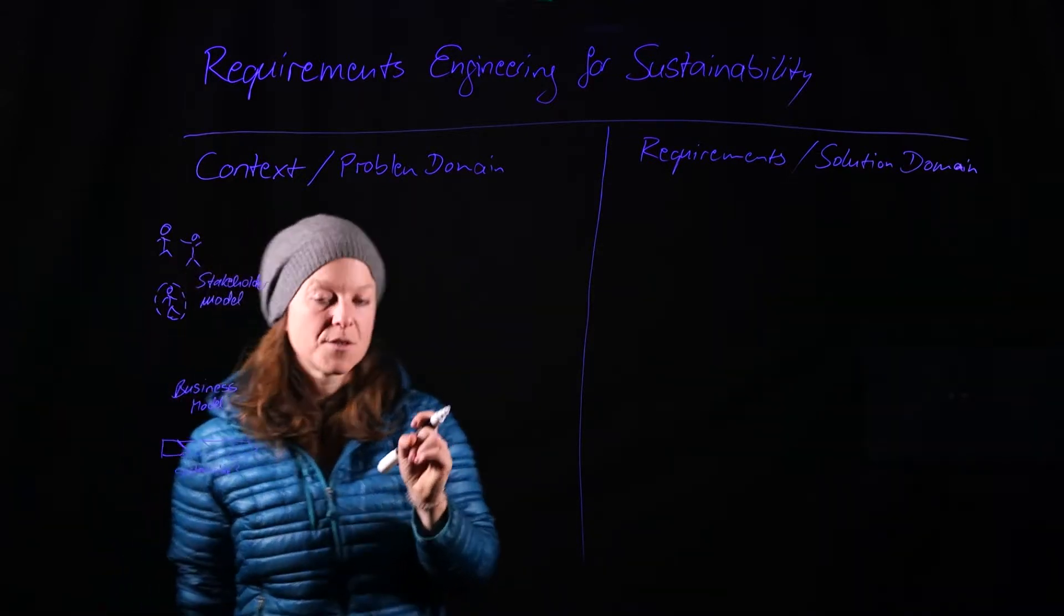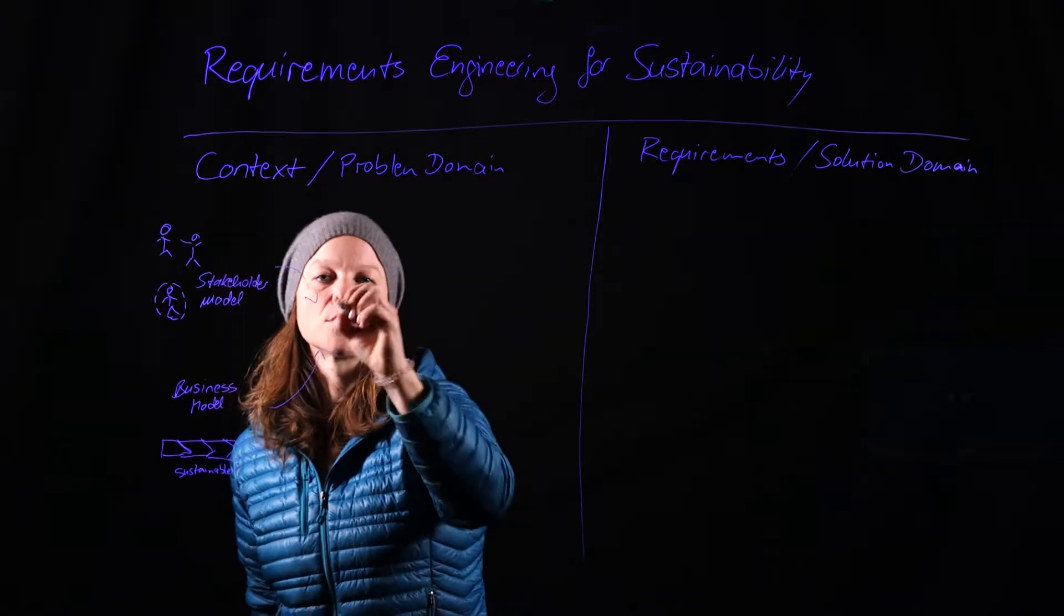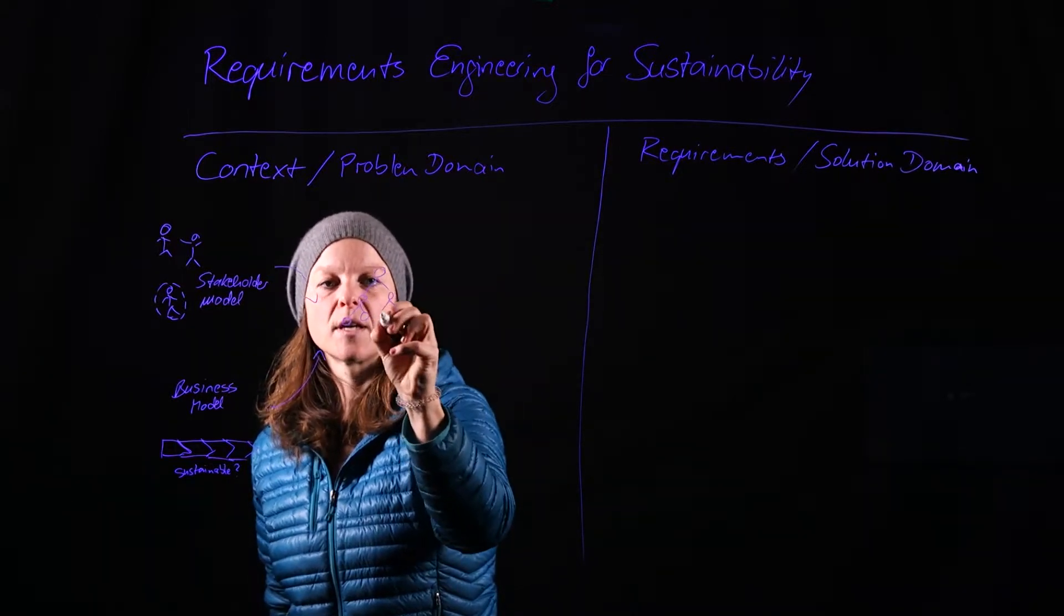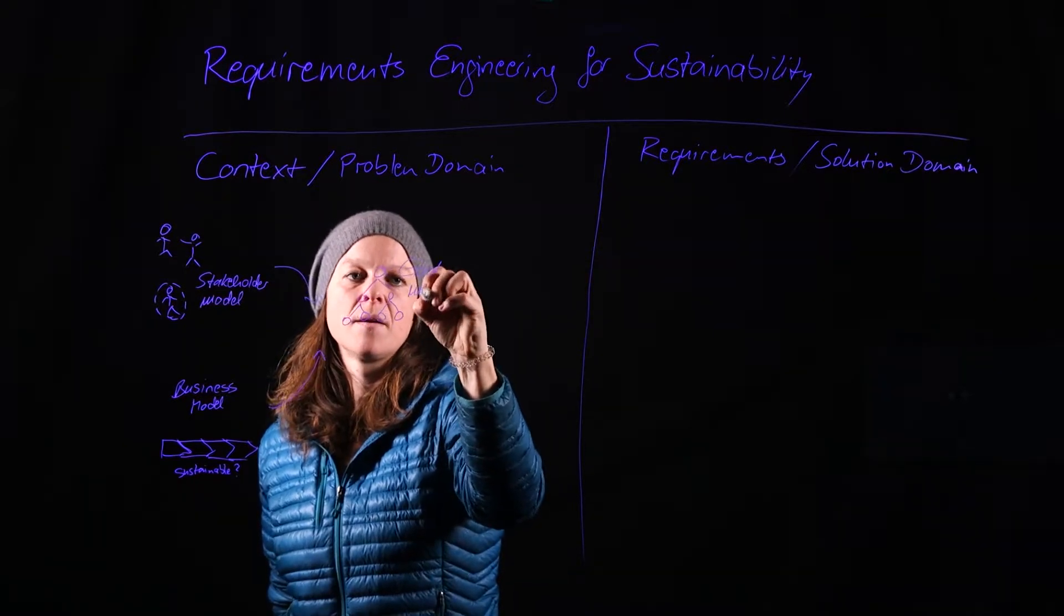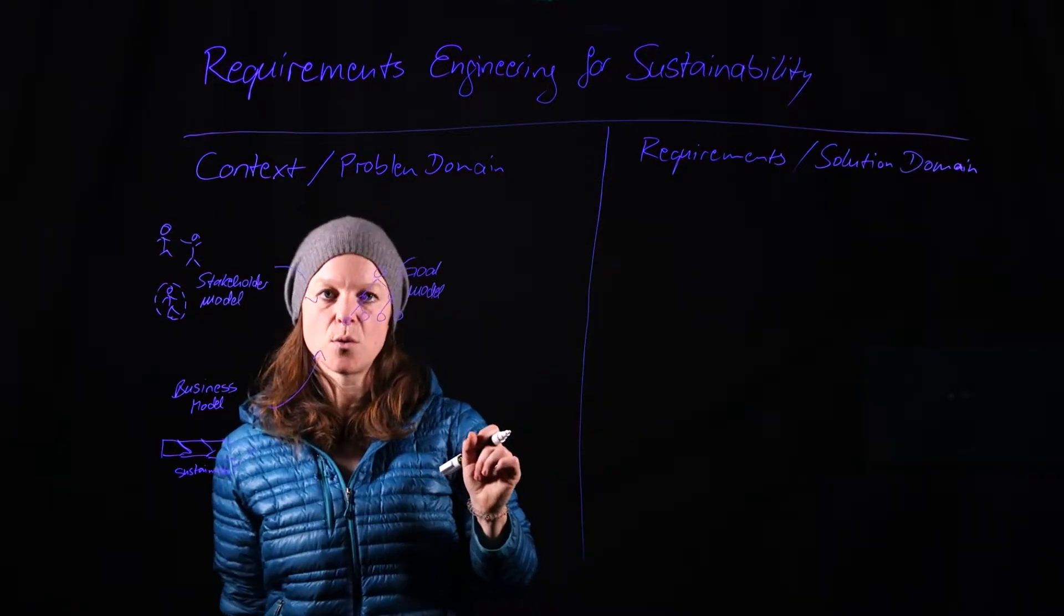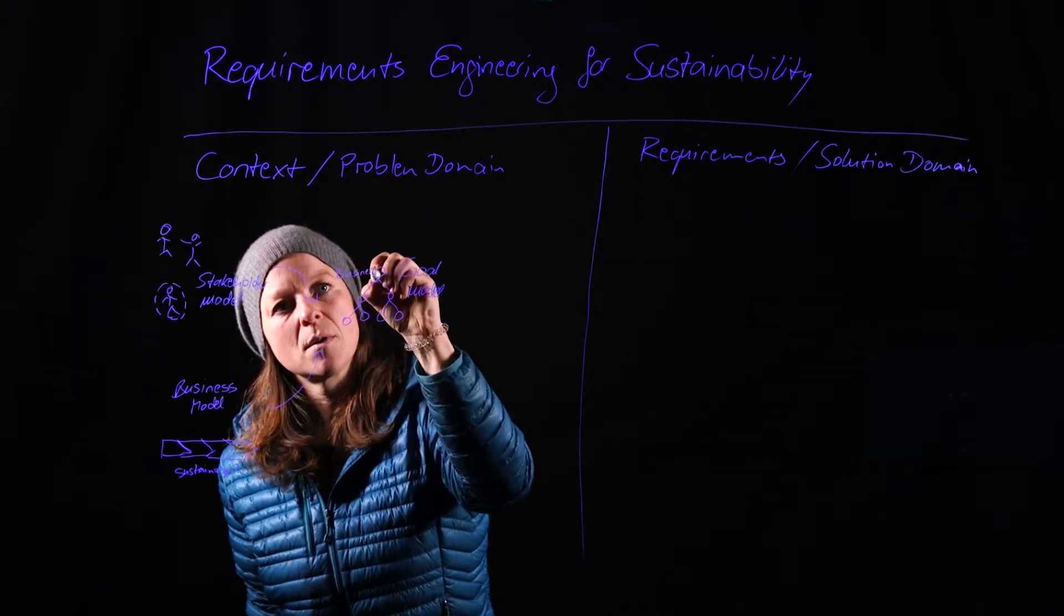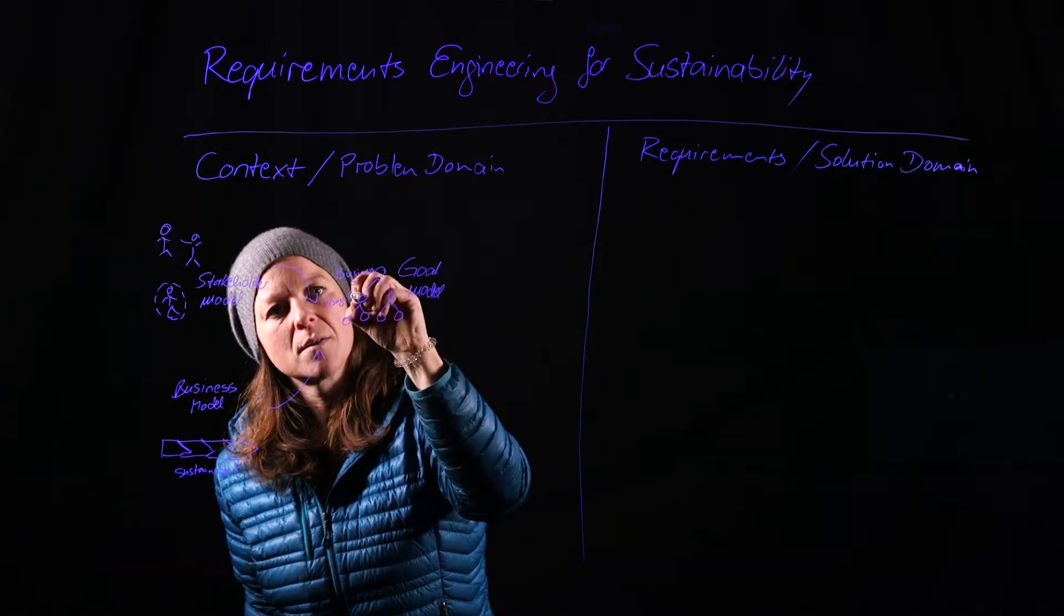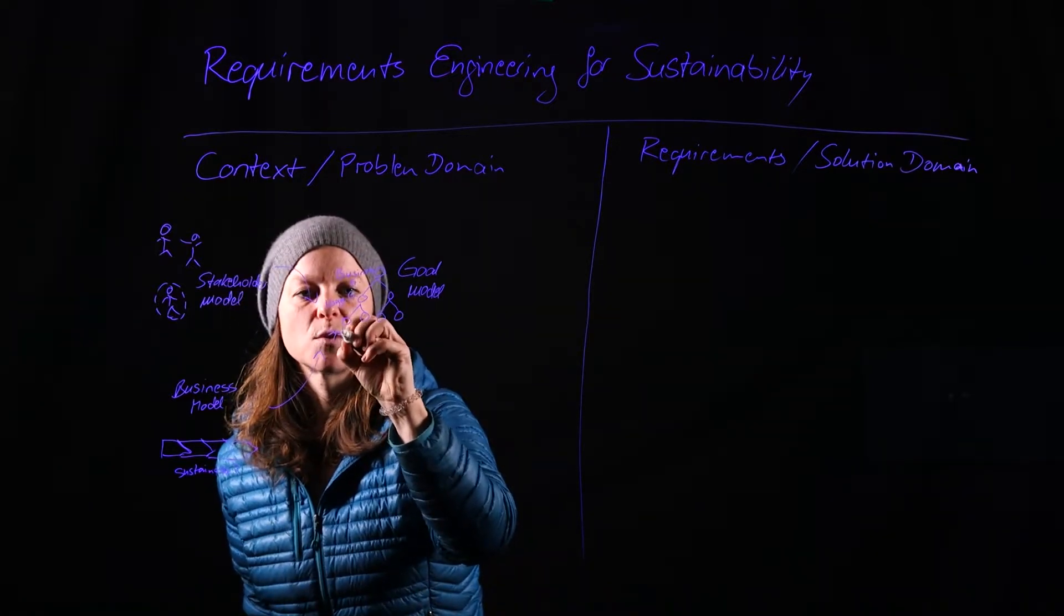Once we have that stakeholder model and the general business model, we can start developing a so-called goal model. Now, the goal model can look like this, like a tree. It might have one root node and then several sub-goals, and then these get decomposed into sub-goals again. We might have business goals up here. We might have usage goals on the middle layer that tell us about what capabilities this future system is going to have. And then system goals on the bottom.